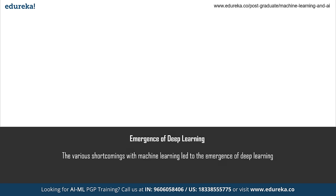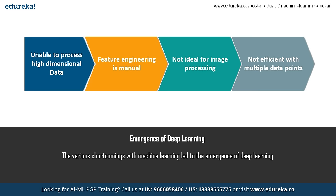Machine learning was a major breakthrough in the technical world. It led to the automation of monotonous and time-consuming tasks, helped in solving complex problems and making smart decisions. However, there were a few drawbacks in machine learning that led to the emergence of deep learning. First, it was unable to process high-dimensional data. Machine learning can only process small dimensions of data with a small set of variables. If you want to analyze data containing hundreds of variables, machine learning cannot be used.